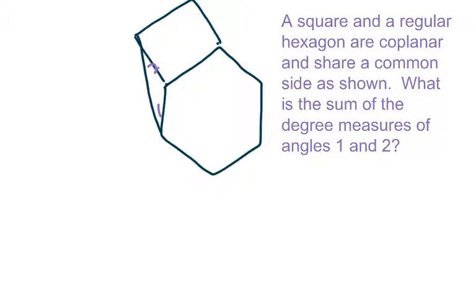All right, in this picture we have a square and then a regular hexagon, six sides, and they're coplanar. That just means they're on the same plane, and they share this common side right here.